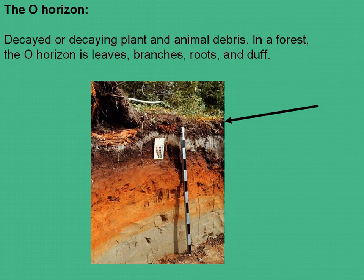At the very top of a forest soil horizon, you typically have the O-horizon, or the organic layer, which is made up of decayed or decaying plant and animal debris, including leaves, branches, roots, and the loose stuff. It also includes the humus layer, which is organic material that you can't tell what it is anymore. The duff layer has very distinguishable characteristics of what it is that's decomposing, whereas the humus layer is undistinguishable organic matter. Those are the two layers involved in the O-horizon.